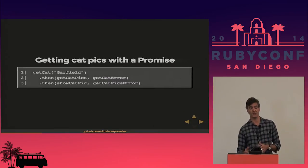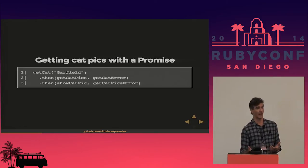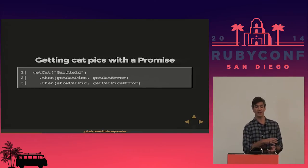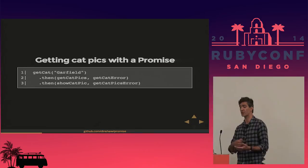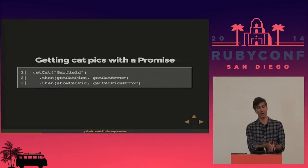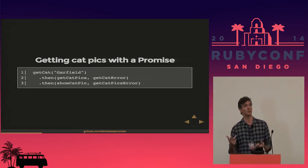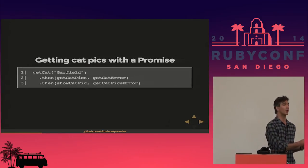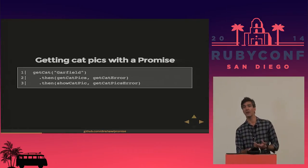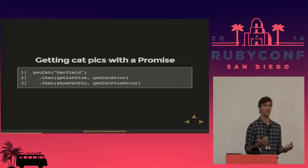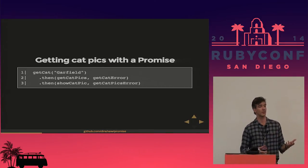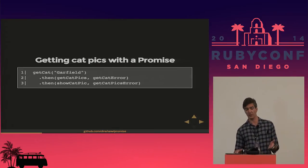Wouldn't it be nice to express what we're actually thinking — get a cat, get the cat pics, show the cat pic? Promises attempts to solve this. Here is working promise code: we call get_cat, and get_cat returns a promise. One of the contractual obligations of a promise is that the return value will respond to .then. A promise begins in a pending state, then becomes either fulfilled or rejected. If fulfilled, it follows the success path through all subsequent thens. The success path is the left-hand argument of then. If anything fails, it switches to the error path — the right-hand argument.